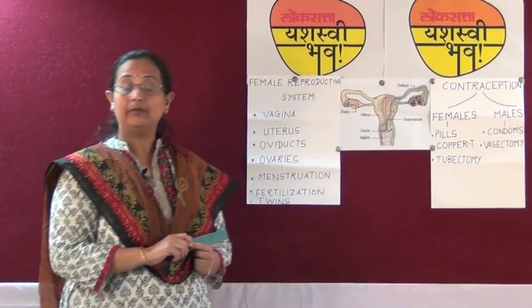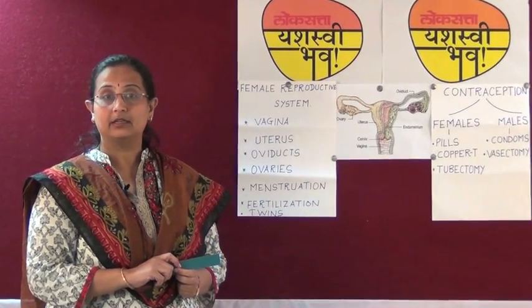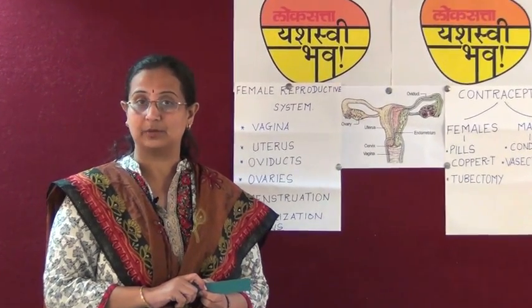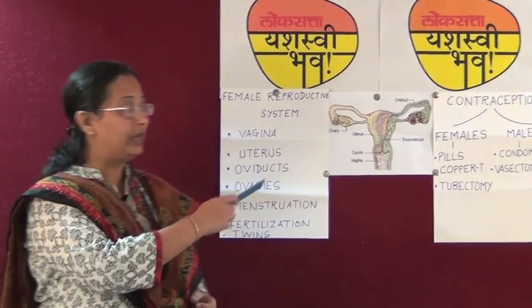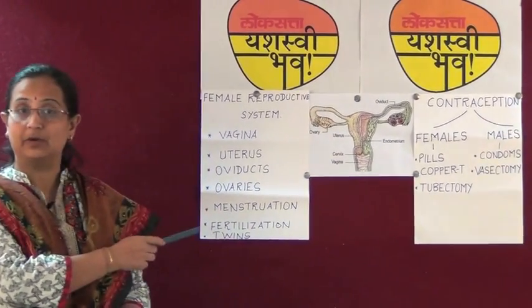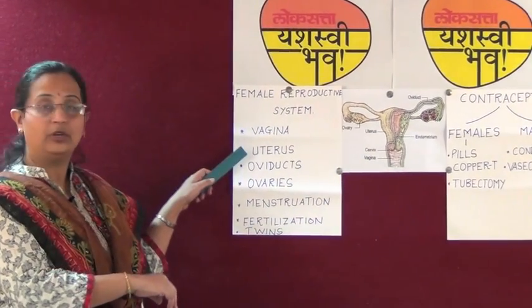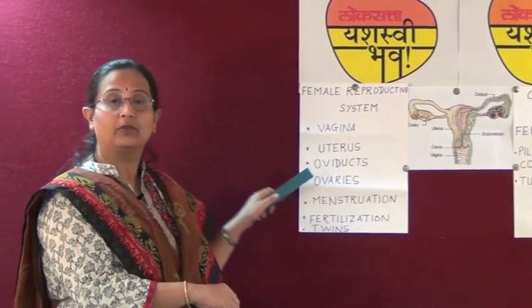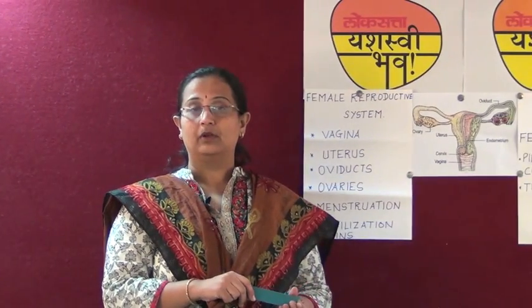Today we will be discussing in detail about the female reproductive system. The parts of the female reproductive system are vagina, uterus, oviducts, and ovaries.